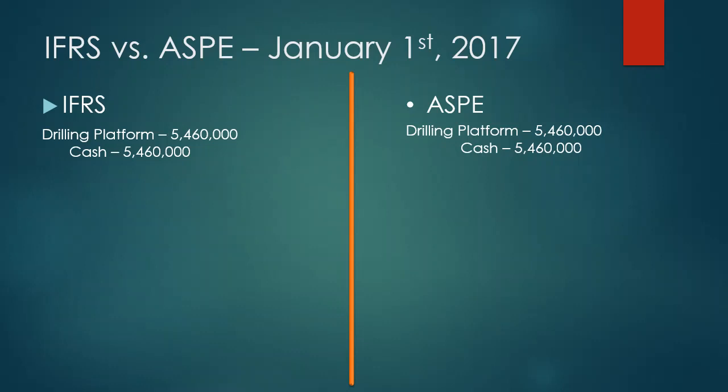The first entry is the drilling platform. The company obtained an asset — the drilling platform. So both reporting standards debit drilling platform because it's an asset to the company. The value is the cash they paid, and because cash is the asset the company gave up, cash of $5,460,000 is credited. Debit drilling platform, credit cash — the first entry is the same for both standards.